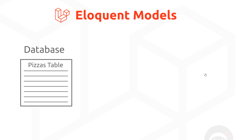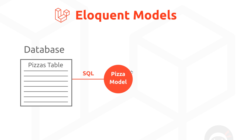First of all, what is a model? A model in programming is normally a class or object blueprint that represents a certain type of data. For example, our pizzas table is going to store a pizza record which has a type property, a base property, and a toppings property. Under the hood, Eloquent uses SQL to interact with the database, but it wraps that in an extra layer and provides us with easy-to-use methods on the model to read and write to the database.